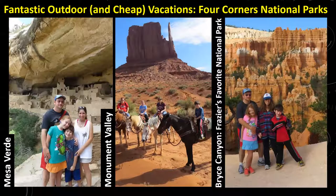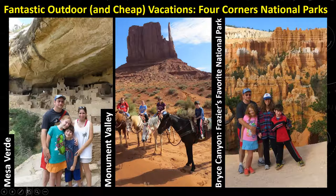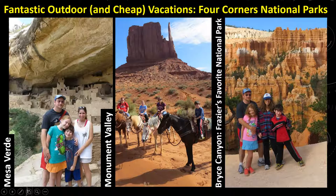One of the great outdoor trips you could take is to see the Southwest United States. You can go see Mesa Verde and walk around the balcony house. You can go horseback riding in Monument Valley the same way Native Americans did — it's actually a Native American reservation. And my favorite national park in the United States is Bryce Canyon with its karst formations, beautiful hoodoos weathered over time, with one of the most beautiful walks named for the first settler, Bryce.